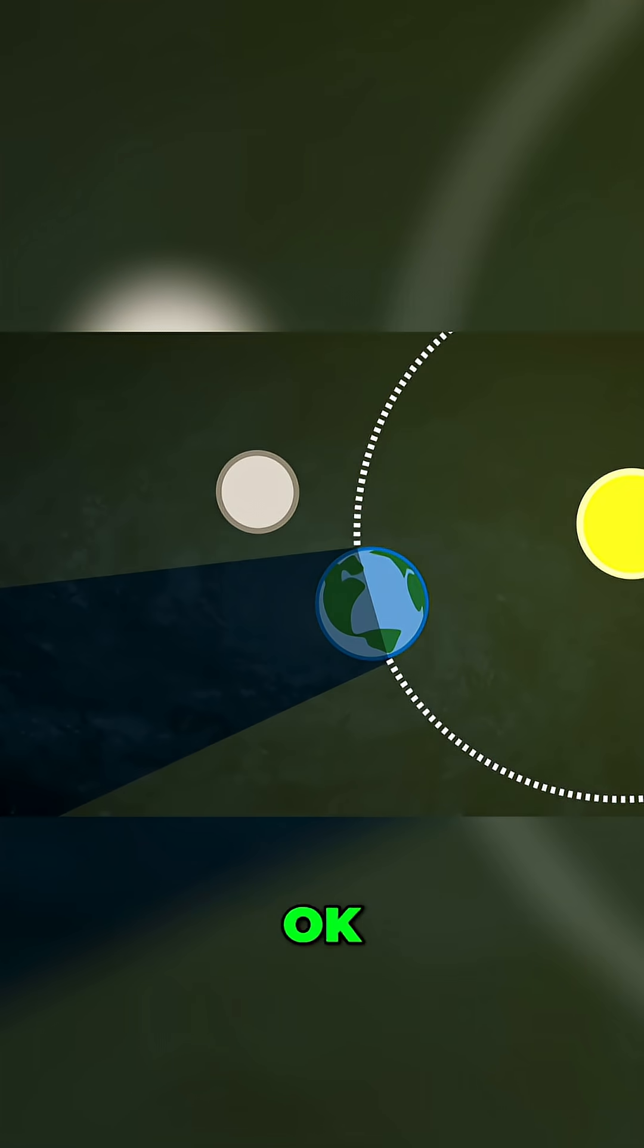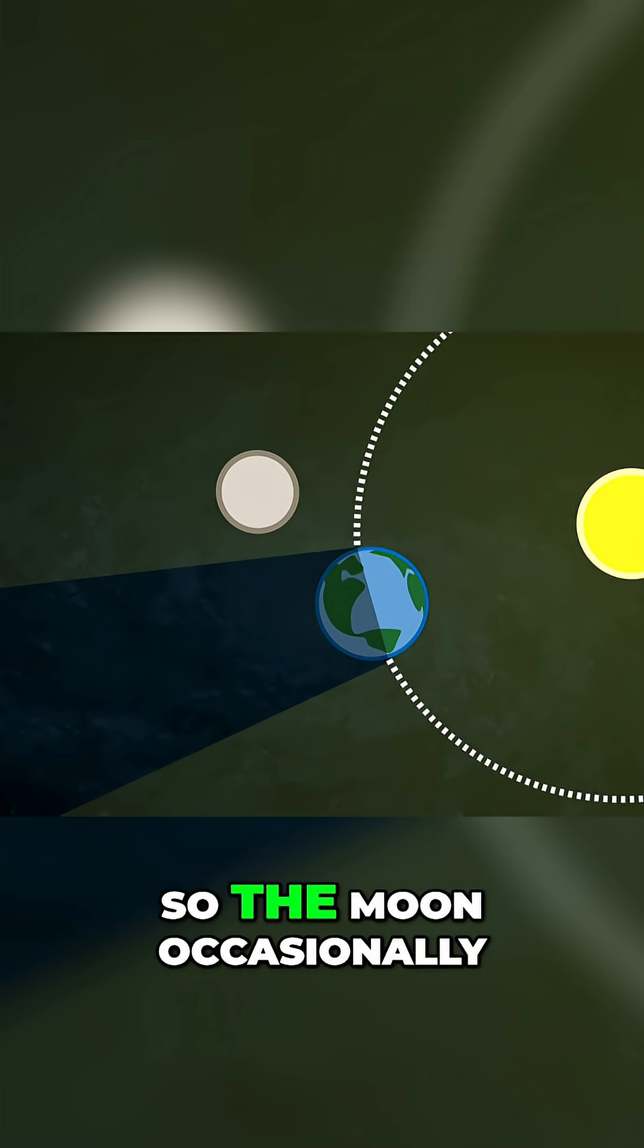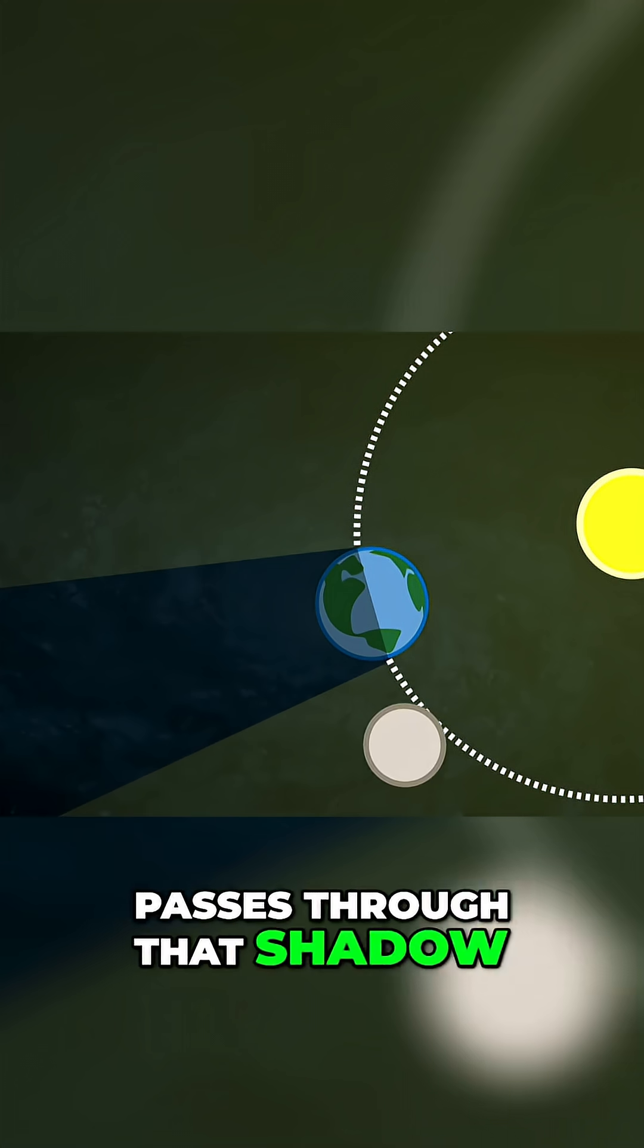Right. Obviously. OK? It's just a shadow. The moon occasionally passes through that shadow, a shadow shining on blackness, a shadow in darkness.